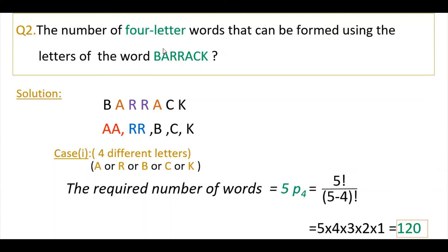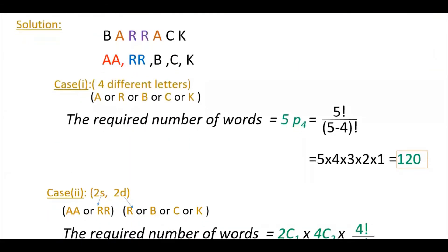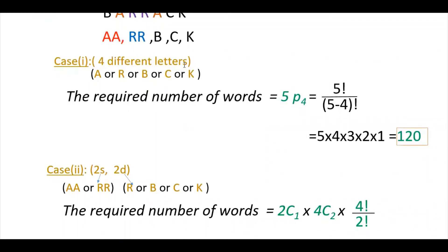The second problem: find the number of four-letter words using letters of the word BARRACK (B-A-R-R-A-C-K). Here, AA and RR are repeating, giving only two groups — that's the key difference from the previous problem. For Case 1, four different letters: there are five distinct letters, so 5P4 = 120. For Case 2, two same and two different: choose one group from two (2C1), then two different letters from the remaining four (4C2).